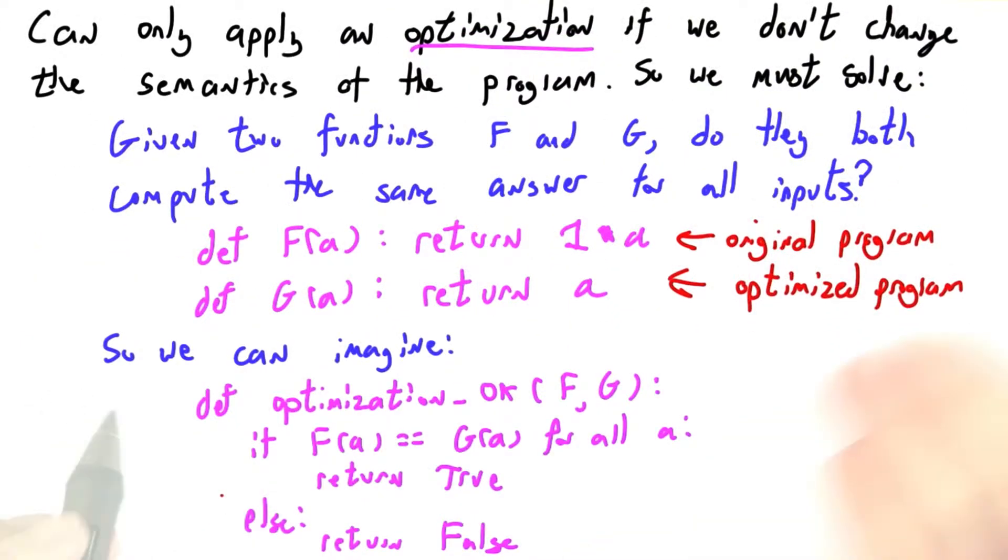So we can imagine framing this as some hypothetical procedure, optimization_ok. You just pass it in f and g, and if f of a is equal to g of a for all a, then you return true, otherwise you return false.